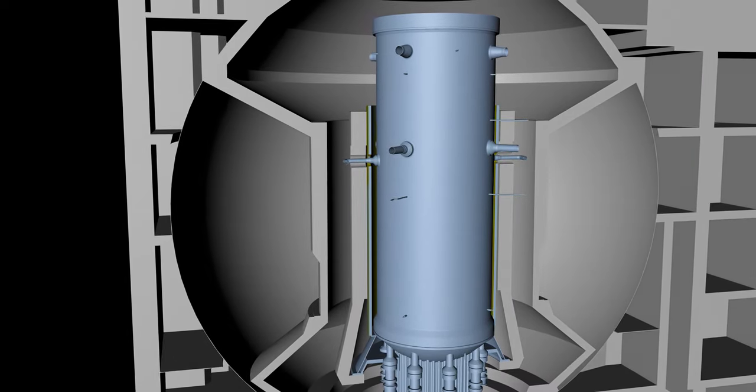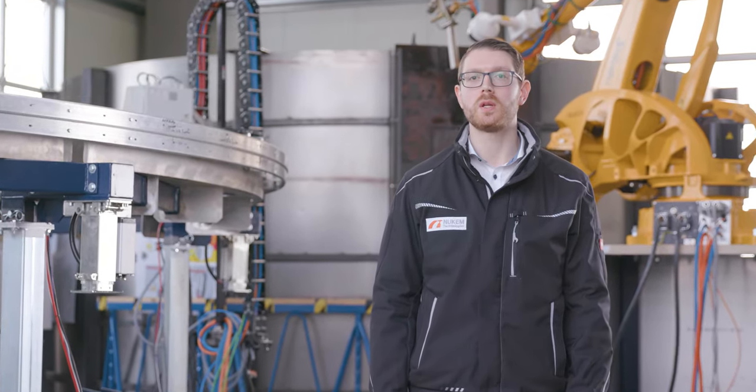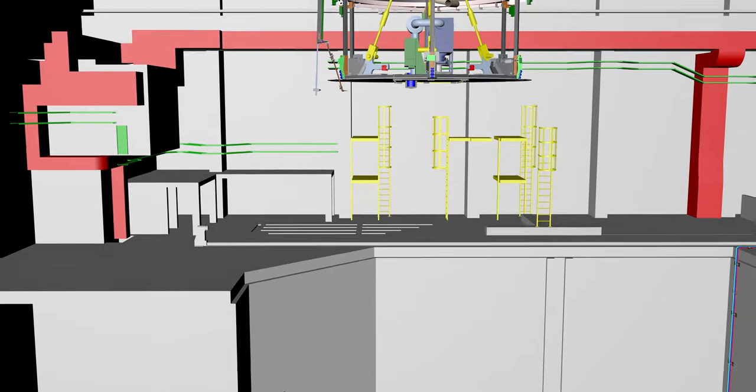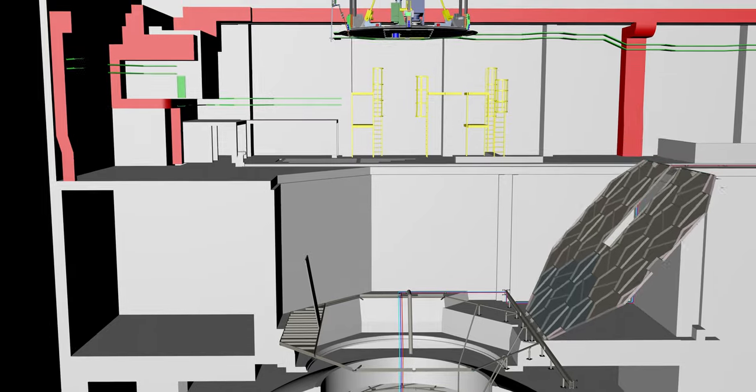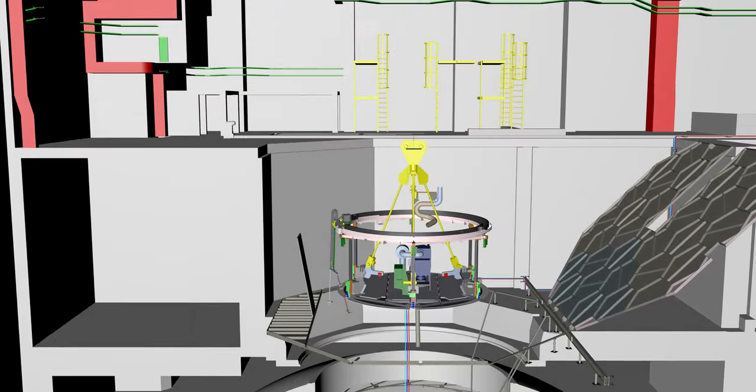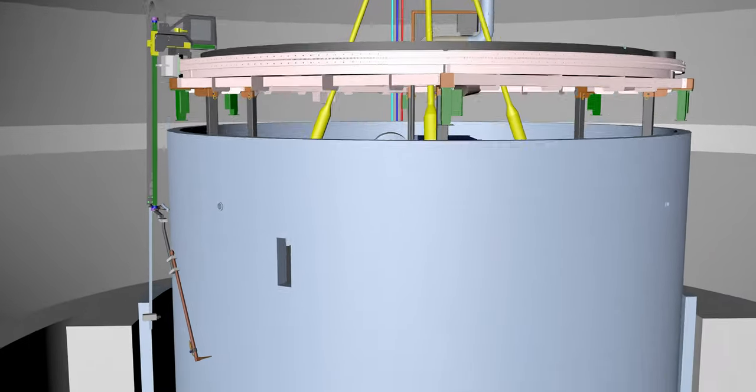The dismantling process itself is split up into two sub-procedures, which we call pre- and post-segmentation. This enables parallel work and therefore allows for a more efficient overall process. The term pre-segmentation is used to describe all dismantling works which take place while the components are still in their original assembly situation.